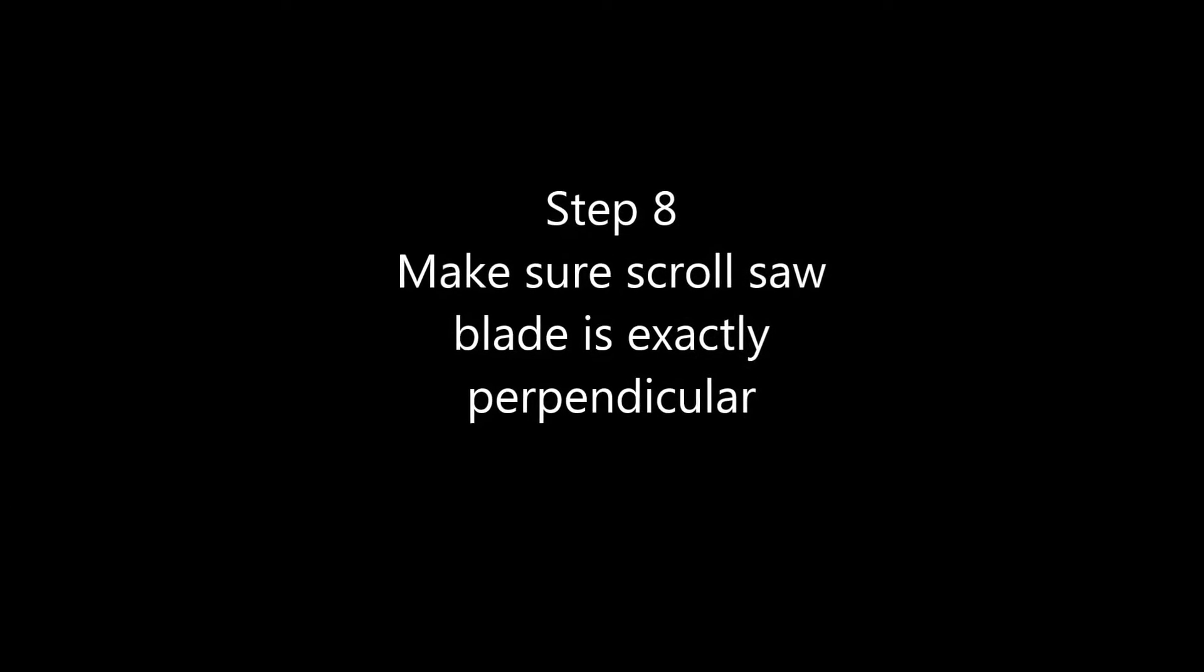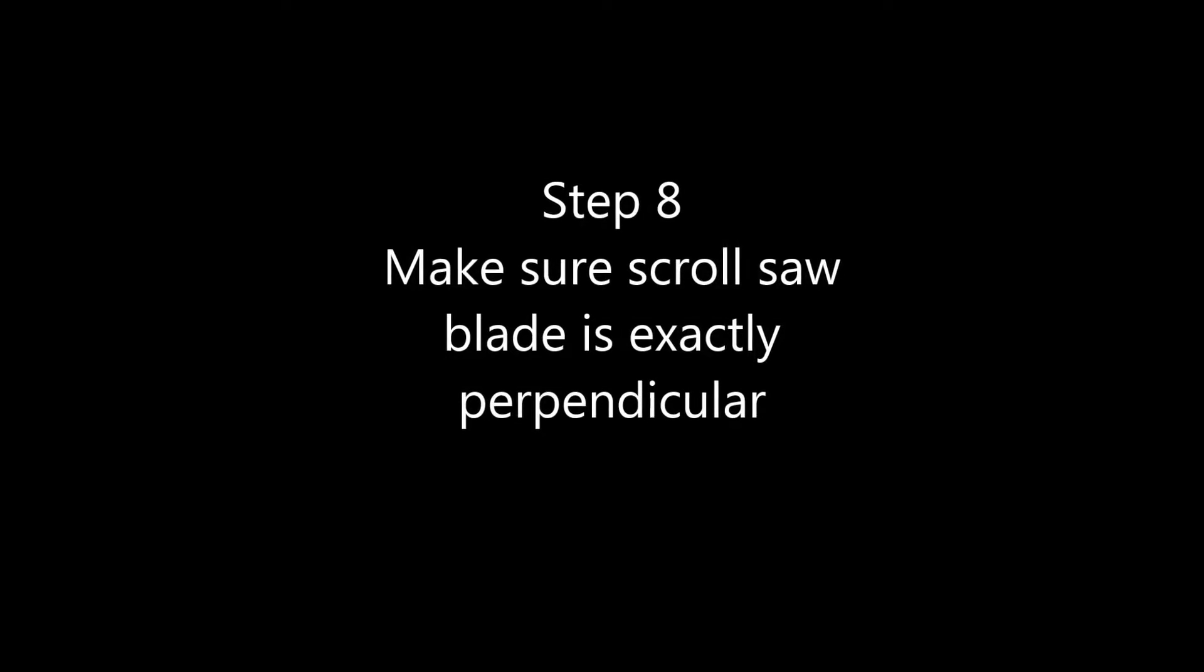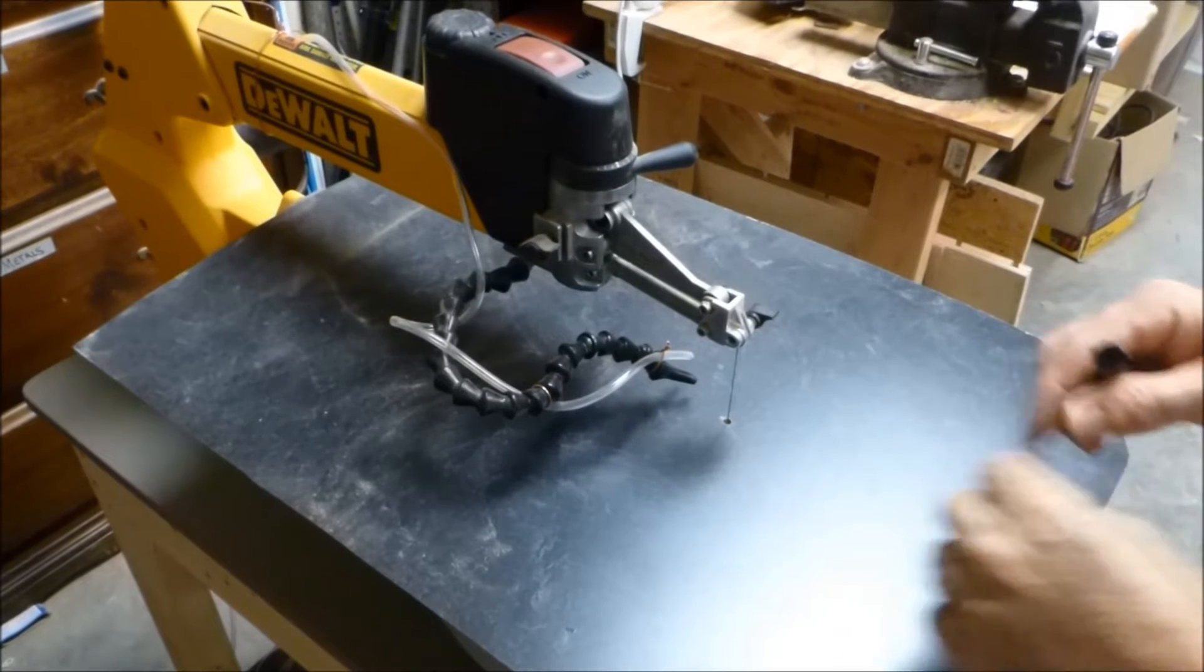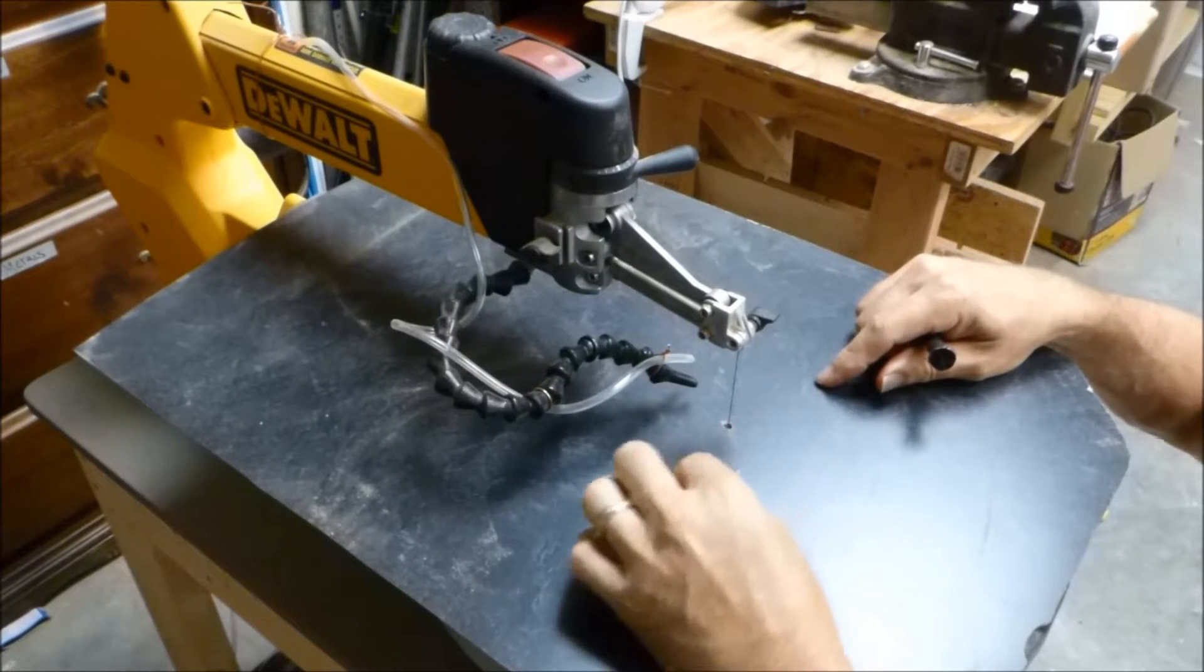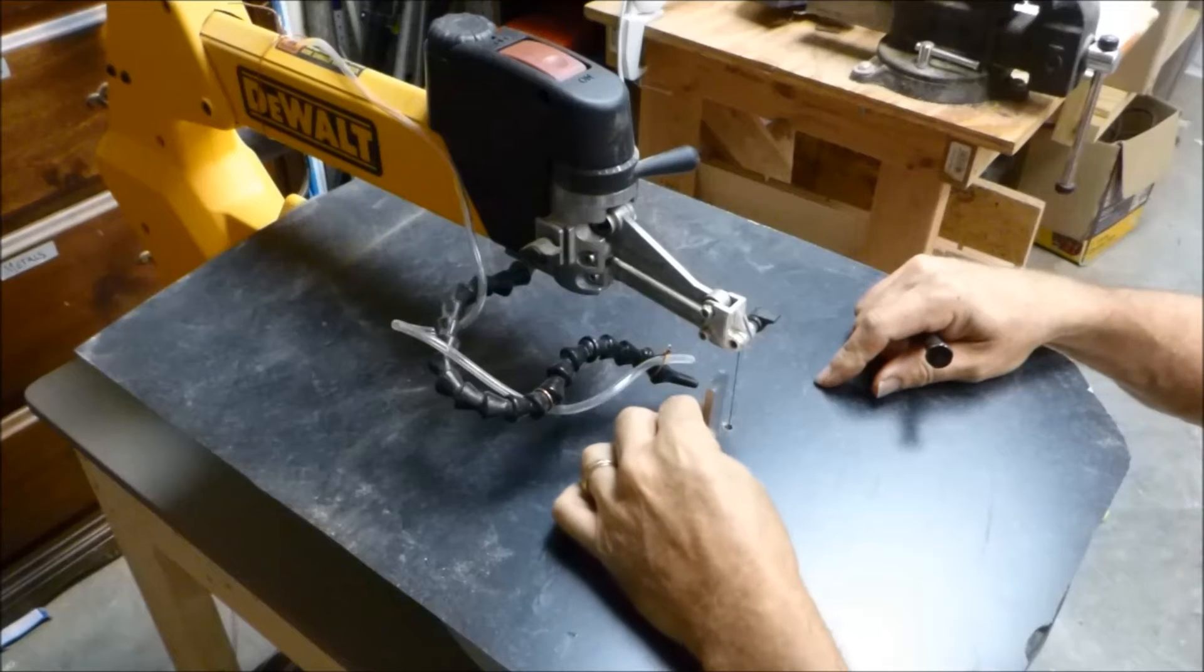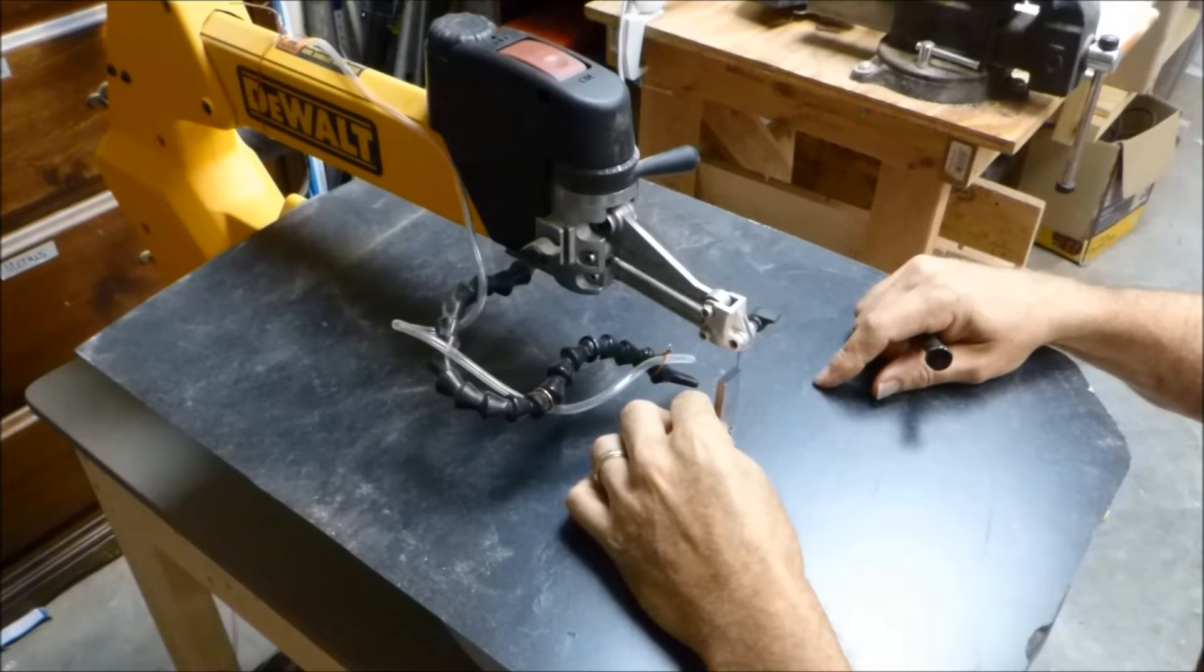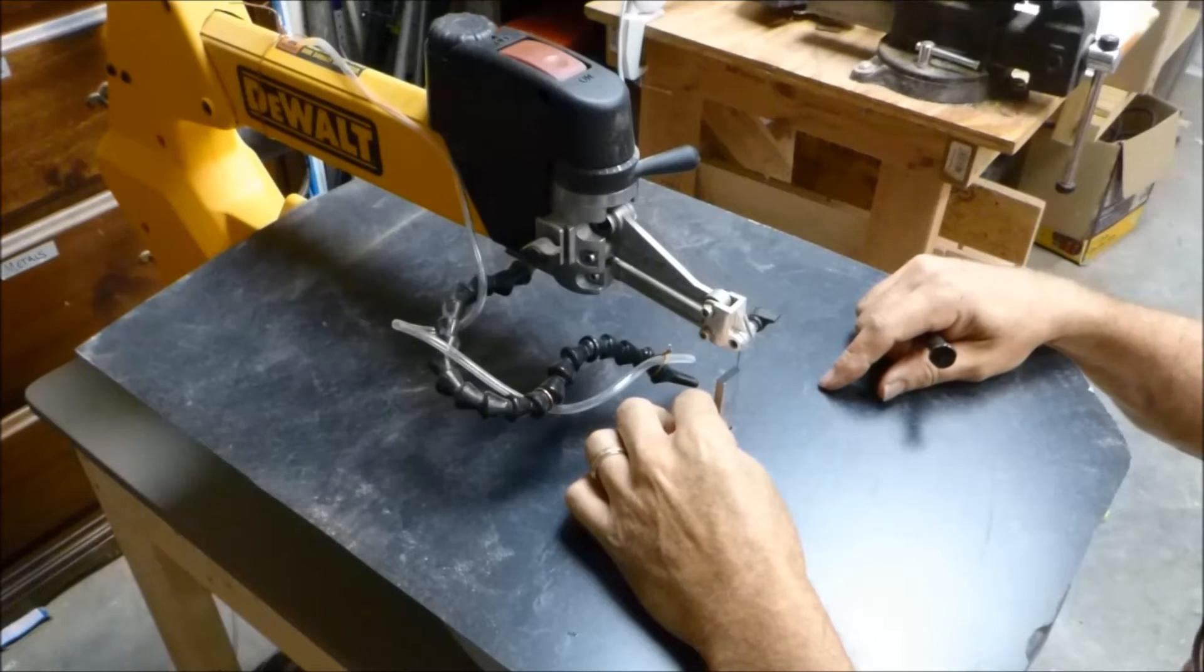Step eight. We're getting ready to cut. But first thing is make sure your scroll saw blade is exactly perpendicular. If it's not, things are going to be shifted some, and it won't come together as well. So spend a little bit of time and really make sure it's as close to perpendicular as you can.